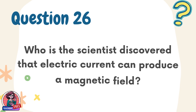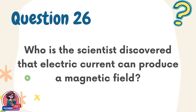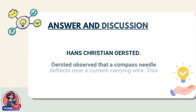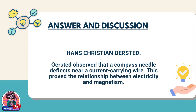Question 26. What scientist discovered that electric current can produce a magnetic field? Answer: Hans Christian Oersted. Oersted observed that a compass needle deflects near a current-carrying wire. This proved the relationship between electricity and magnetism.